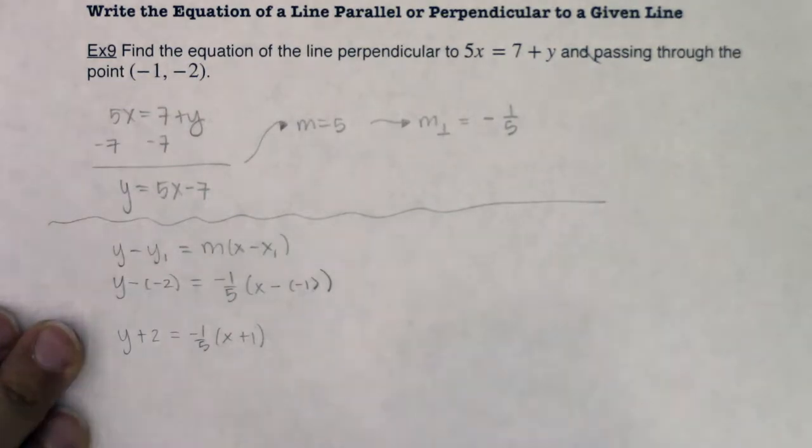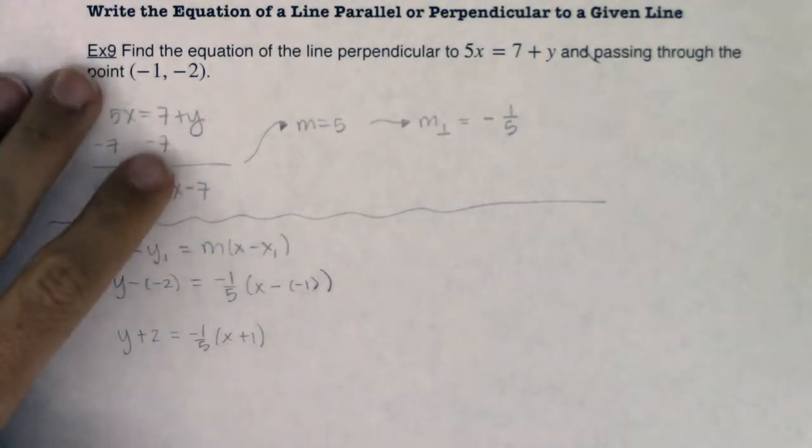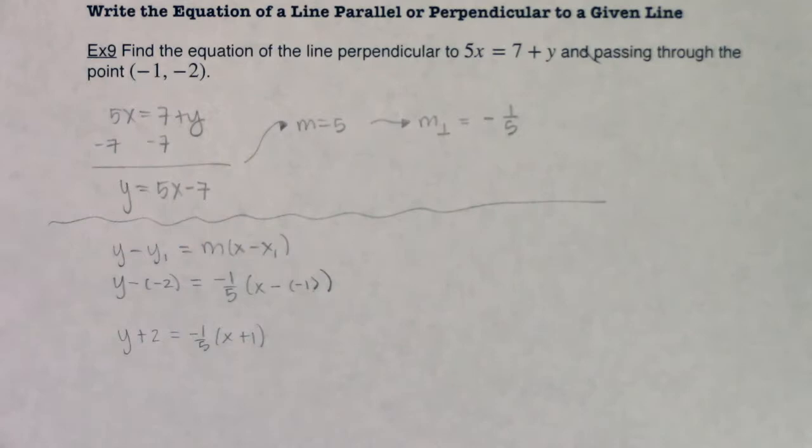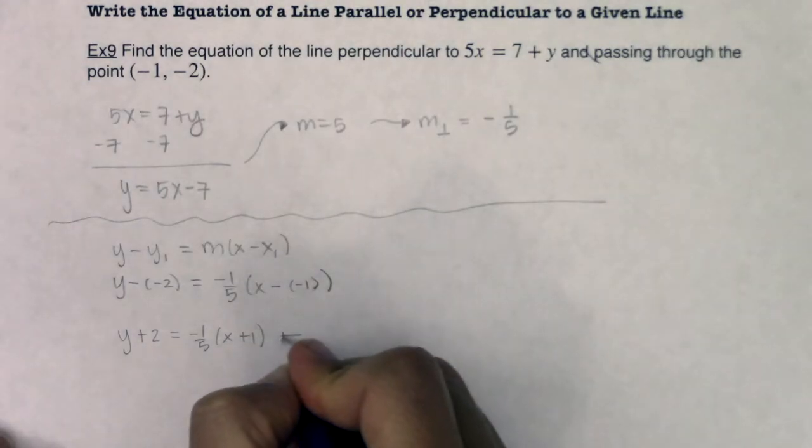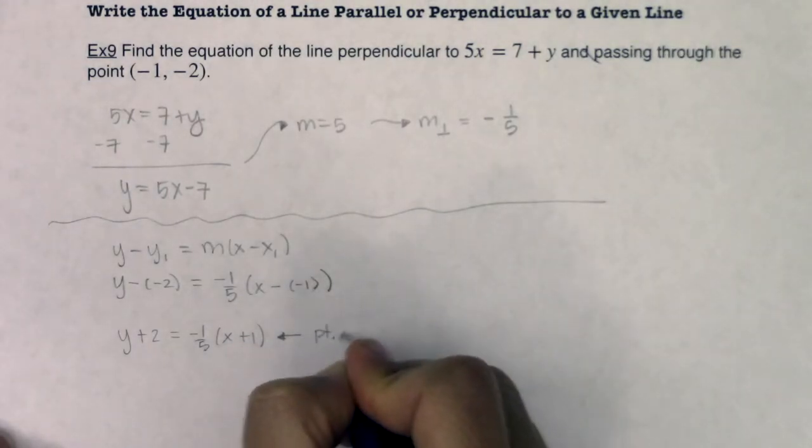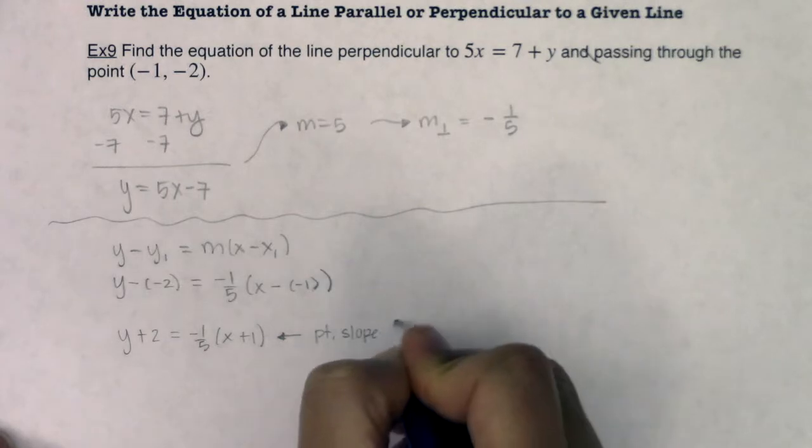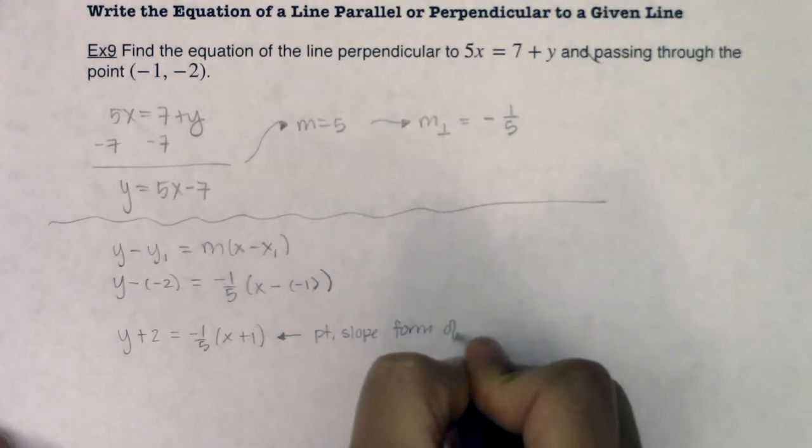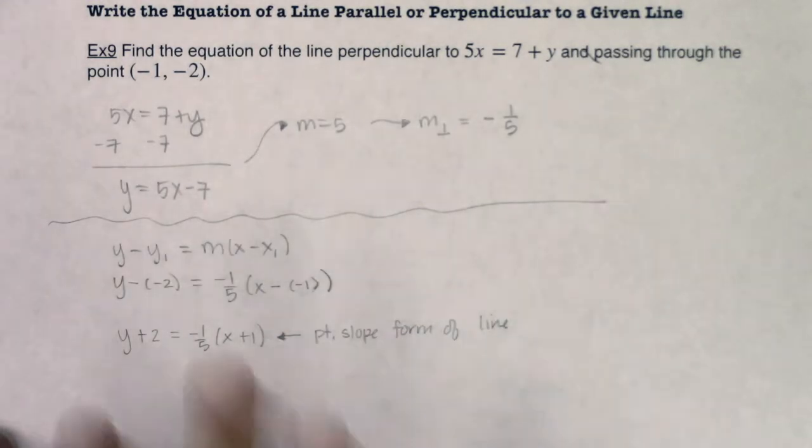So here I'm looking at y plus 2 equaling negative 1 5th times x plus 1. Now I want to be clear that since I didn't specify in this problem to write the equation in standard form or slope intercept form, I could leave it here. This could be my final answer. This is the point slope form of the line. And that's a completely acceptable answer. So if you want, you could stop here.